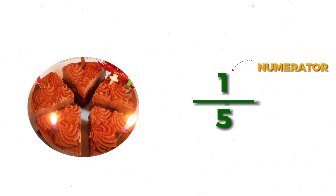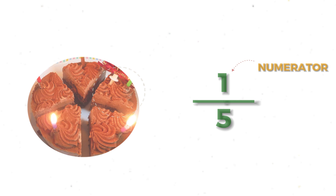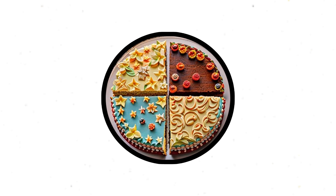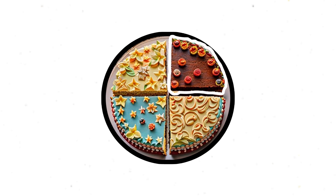A unit fraction has one as its numerator — it is one part of a whole that is divided into equal parts. The numerator tells us how many parts are selected, and the denominator tells us into how many equal parts the whole has been divided. For example, in the fraction one quarter, one is the numerator, indicating we have one part.